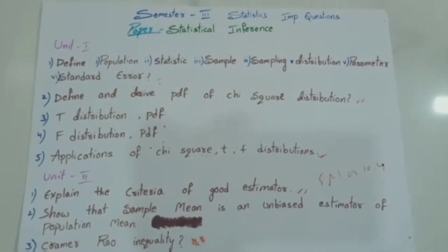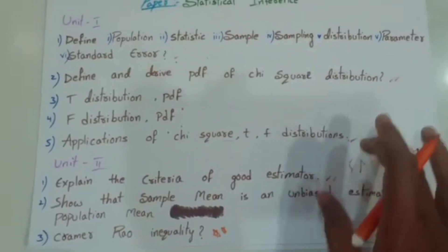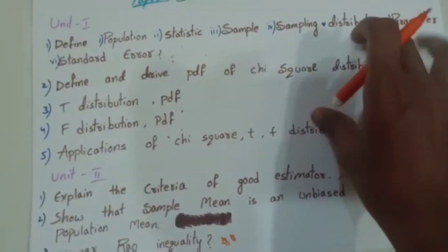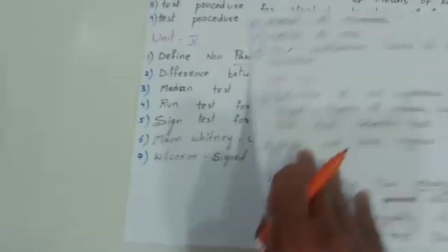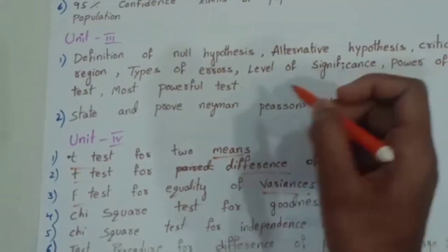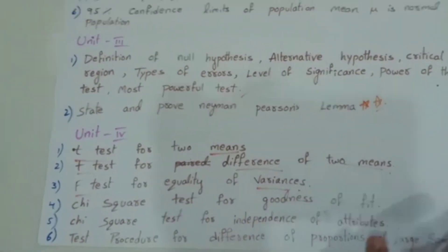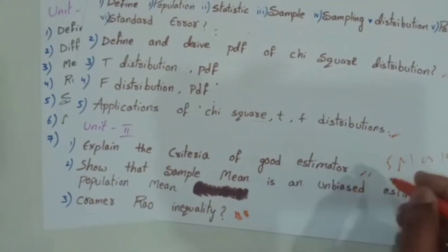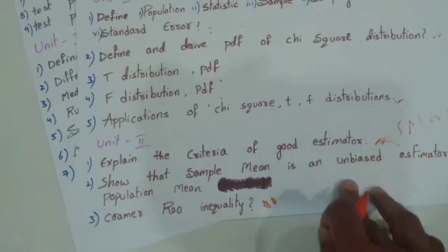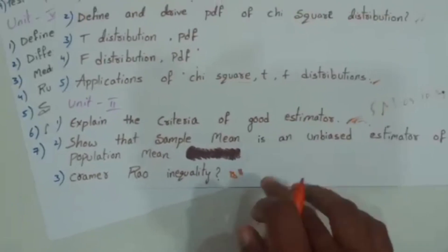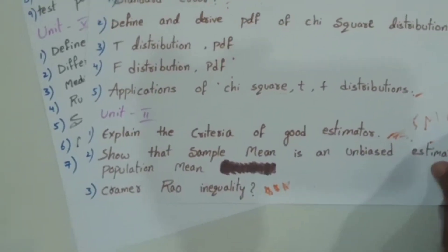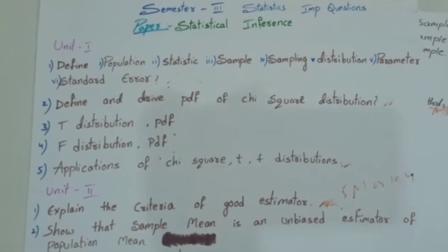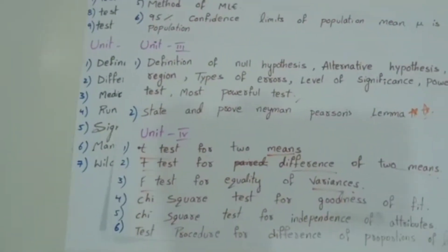To summarize: Unit 1 is very important — definitions for chi-square, t-distribution, f-distribution and their applications. Unit 3 is very important — criteria of a good estimator is a maximum marks question, sample mean as unbiased estimator, and Cramer-Rao inequality is very important. If you prepare the important questions from 3 units, you will pass. If you prepare all 5 units thoroughly, you will be well-prepared.